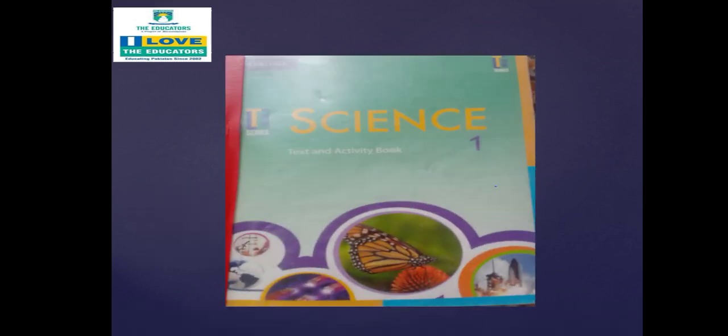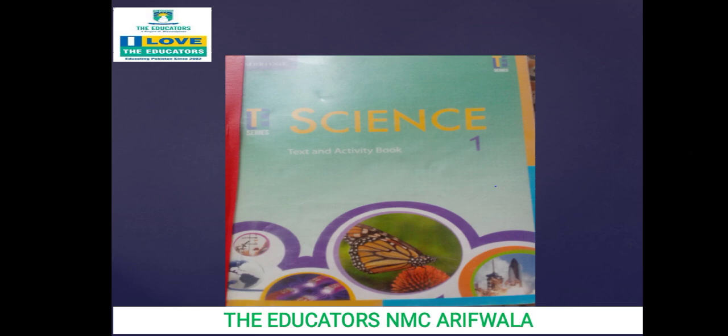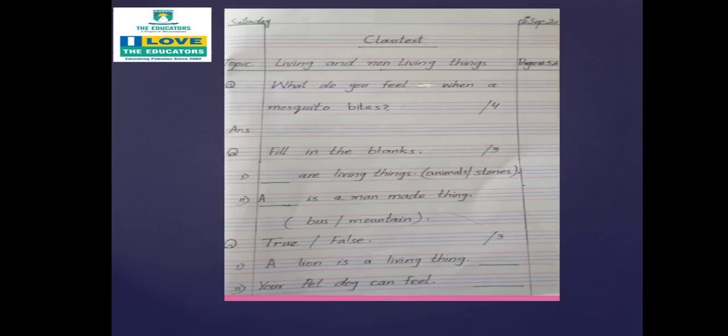This is your science book. Today is Saturday and the date is 12 September 2020. And today is class test, topic is living and non-living thing, page number five and six.